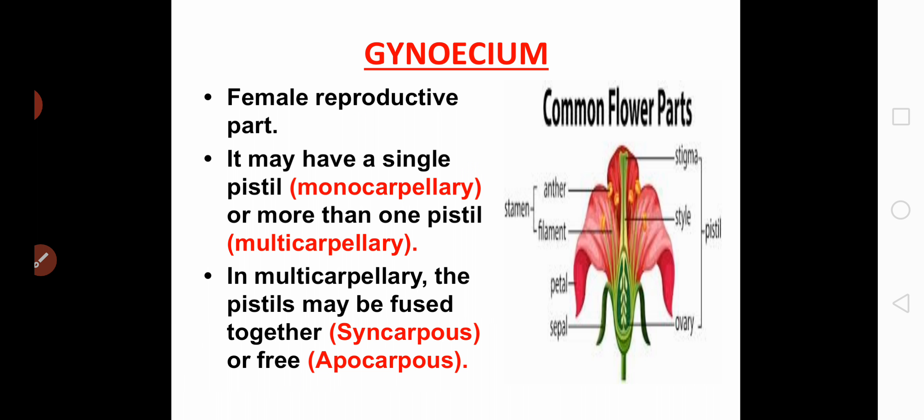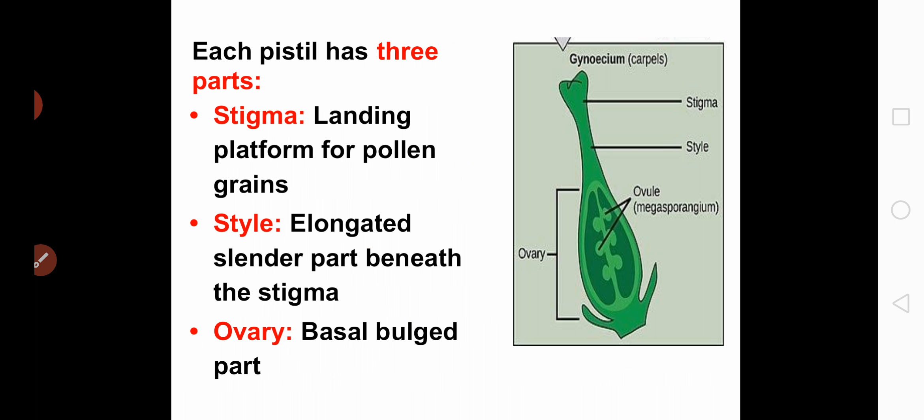In the multicarpillary condition, the pistils may be fused together or free. If the pistils are fused, the condition is called as syncarpous — 'syn' means fusion. If the pistils are free, the condition is called as apocarpous. Now coming to the structure of a pistil.